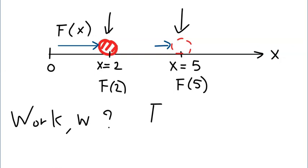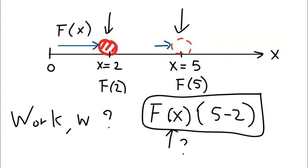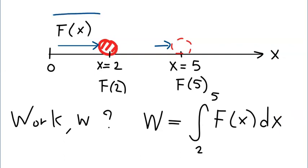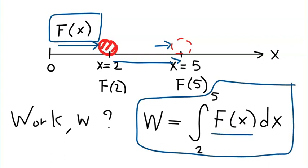If you guess that the work done by such a force will be something like force times displacement, what do you put there? Obviously this definition no longer holds — this is incorrect. The correct definition is given by the following: the work done by this force in moving the object from x equals 2 to x equals 5 is given by an integral of that force function with respect to x, with the initial coordinate as the lower limit and the final coordinate as the upper limit of the integral.